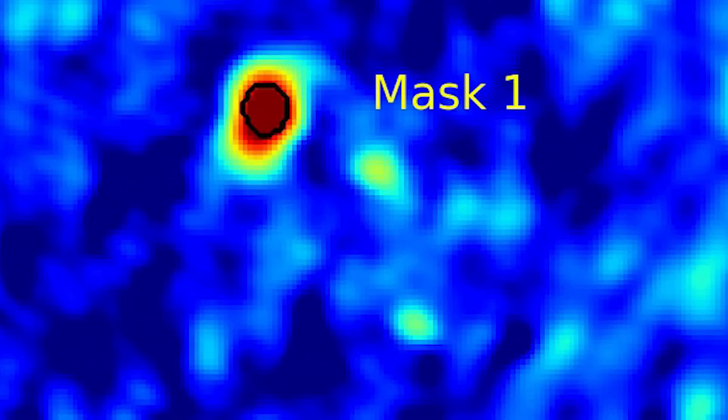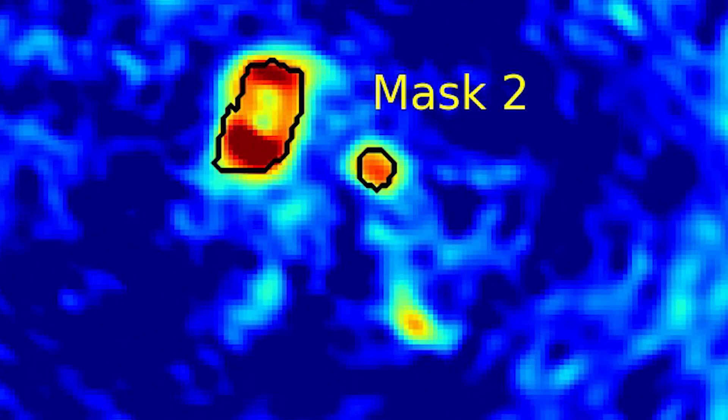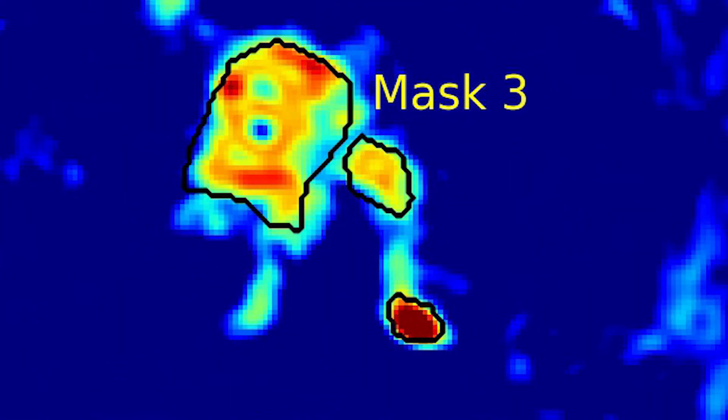If we choose an initial mask for NGC 6334I that is too tight, we can see that in subsequent major cycles we do not model the extended emission very well, causing these crater-like features to appear in our subsequent residual images.